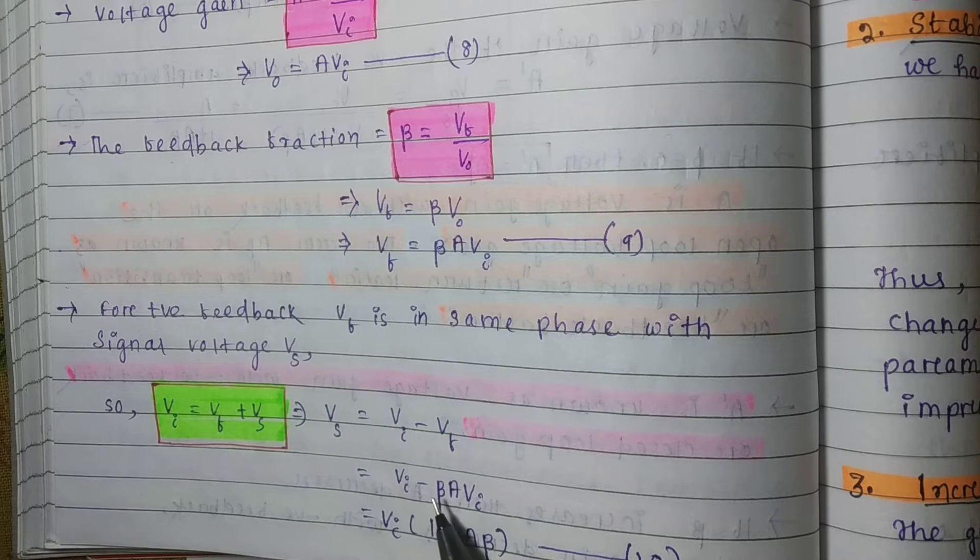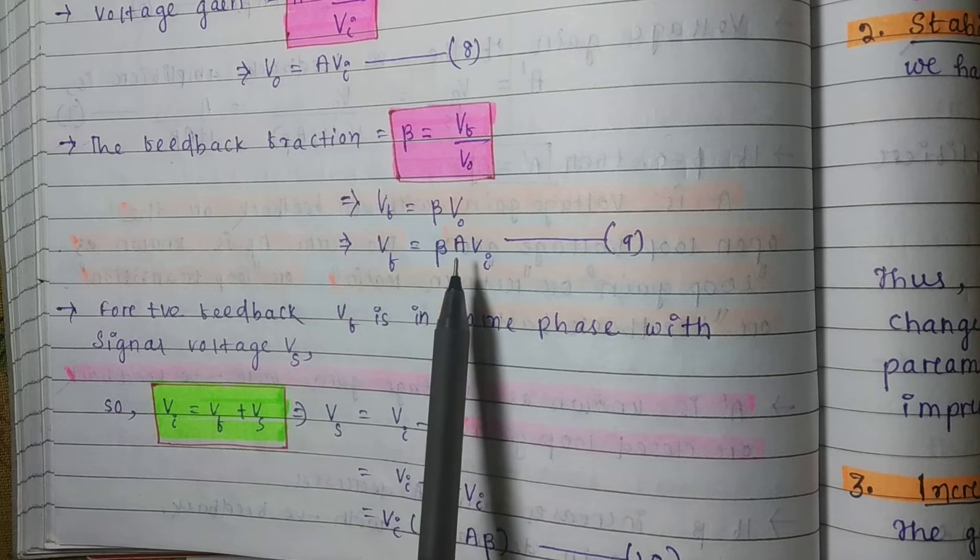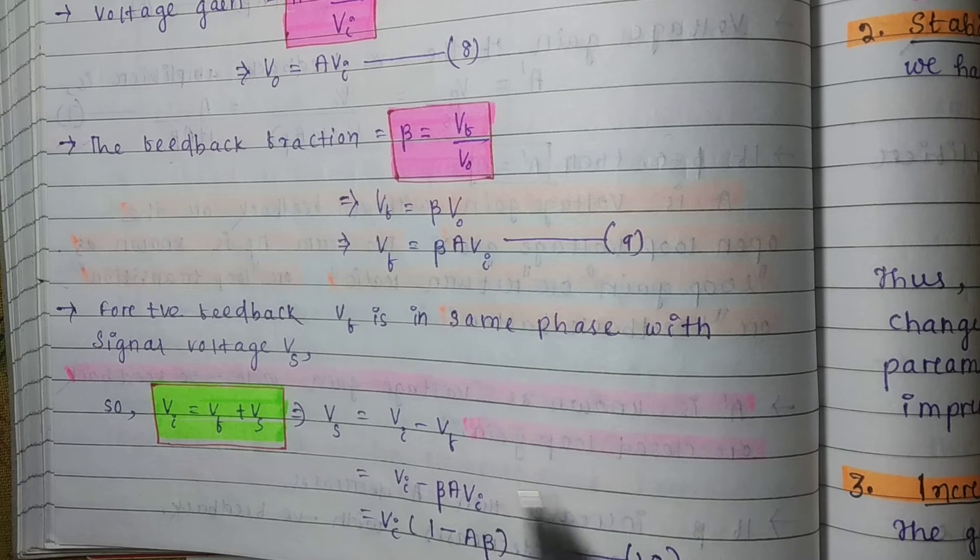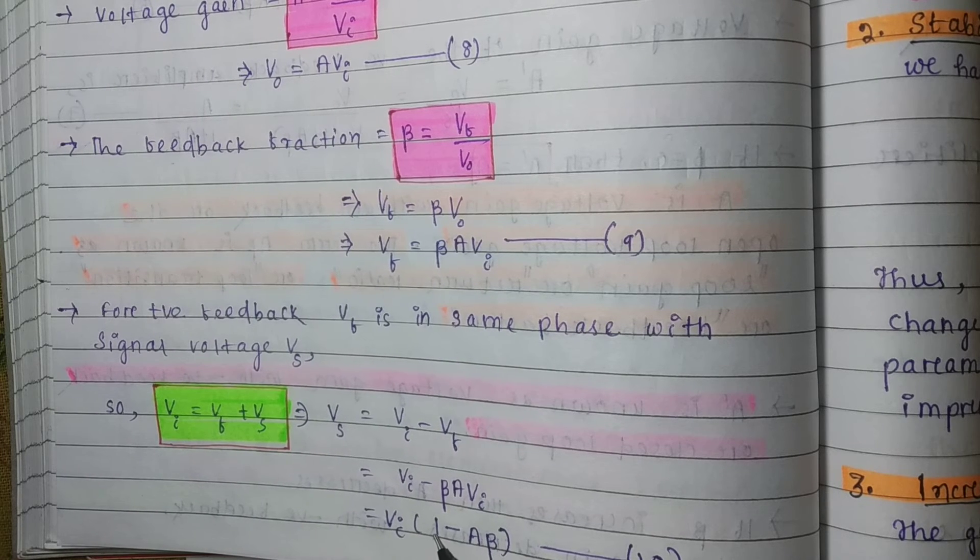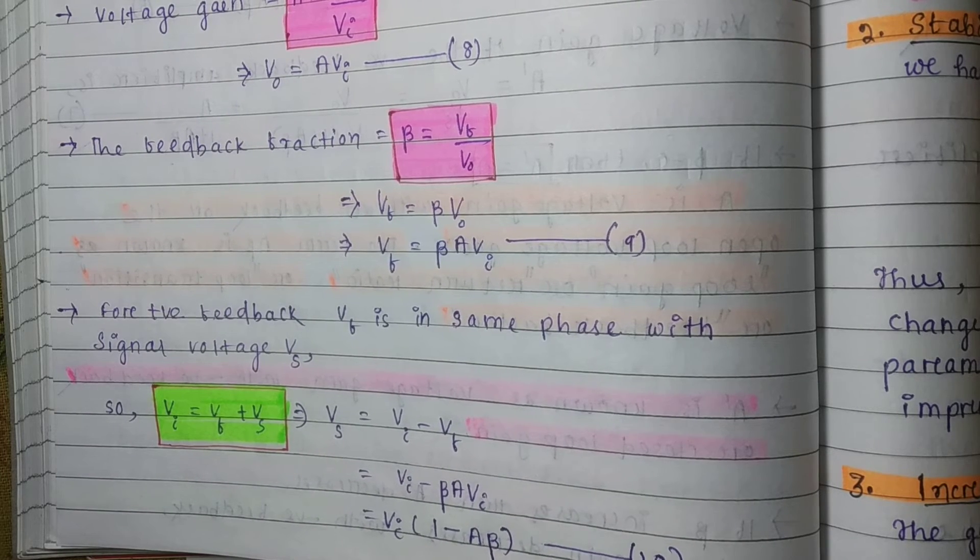V I minus what is the value of V F? Beta A V I. Taking common V I, we get 1 minus A beta.